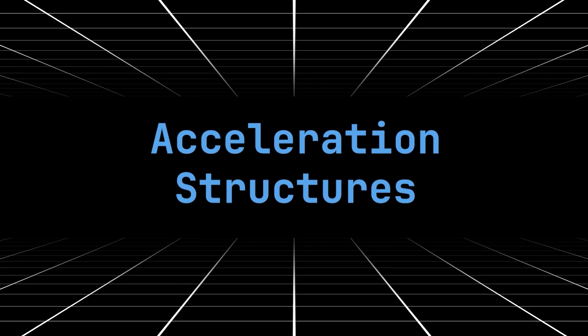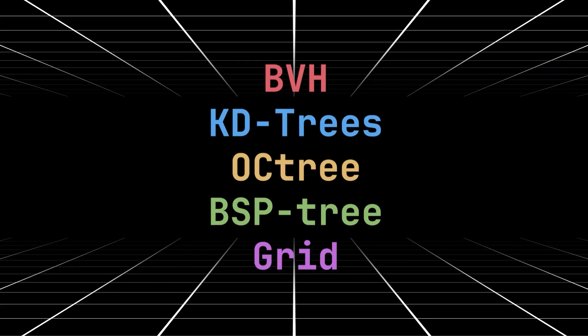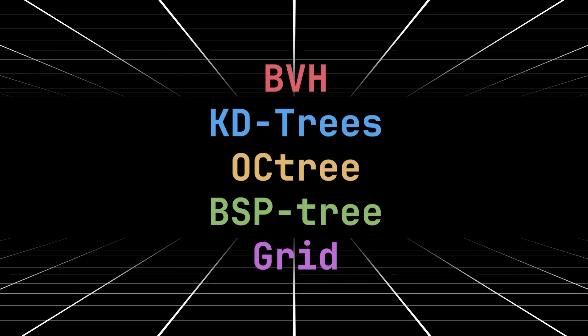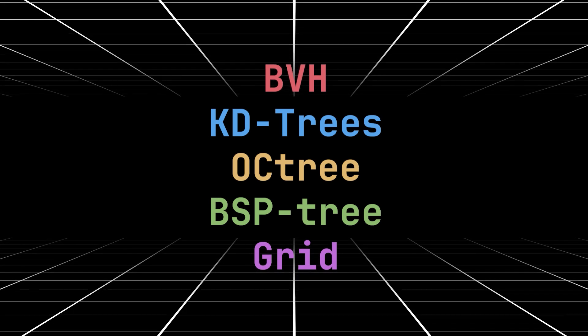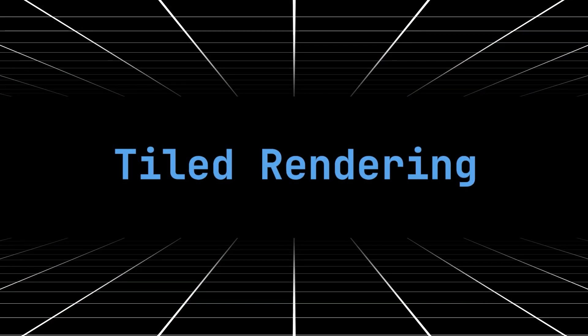Acceleration structures, or data hierarchies, are fancy terms for data structures where we can look up things fast. There's no way to fit them all here, but some examples include bounding volume hierarchies, KD trees, octrees, BSP trees, and grids.